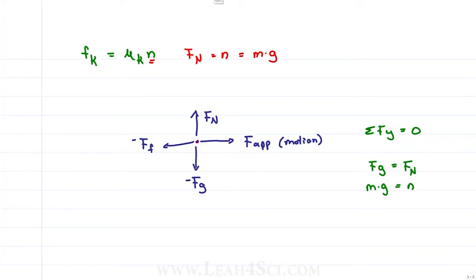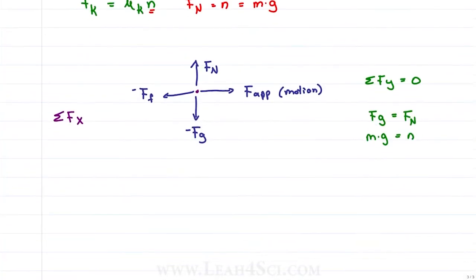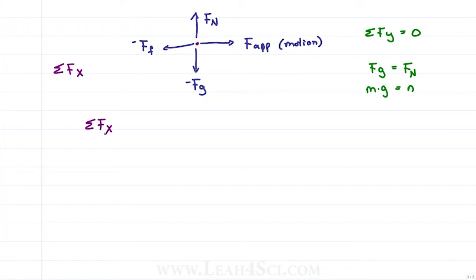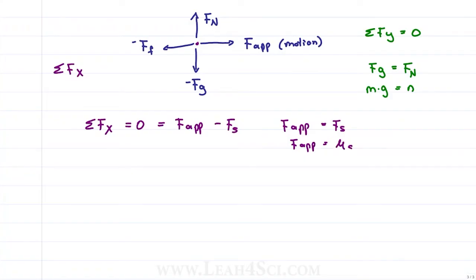The problems typically arise in the x direction. For static friction, if an object is not moving, the sum of forces in x equals zero: force applied minus force of static friction equals zero, so force applied equals mu sub s times n. For kinetic friction, when the sum of forces is not equal to zero, that gives mass times acceleration — recognizing that acceleration is negative because it's a deceleration. If I'm sliding on ice and it's slowing me down, my acceleration decreases until I come to a complete stop.